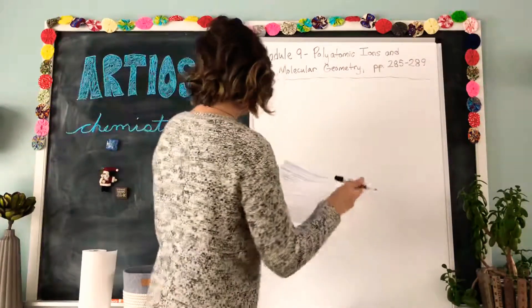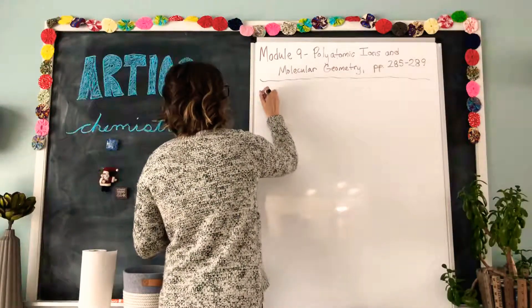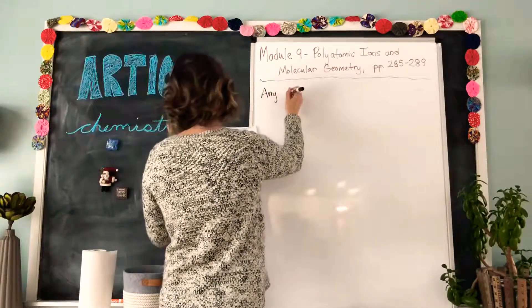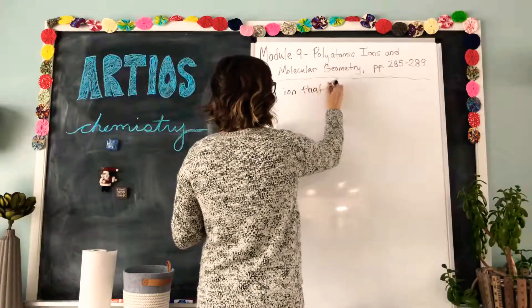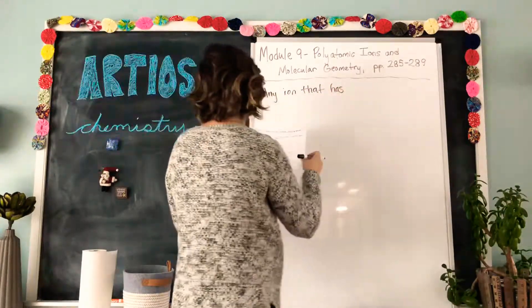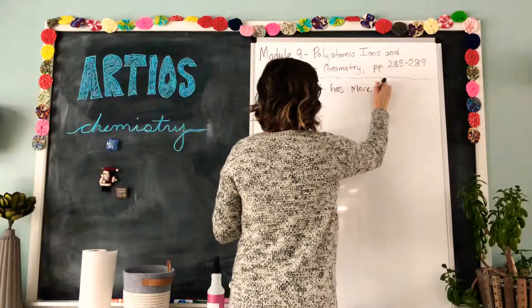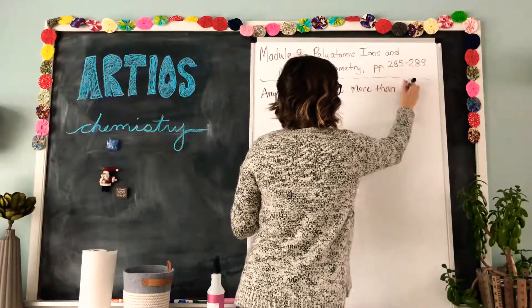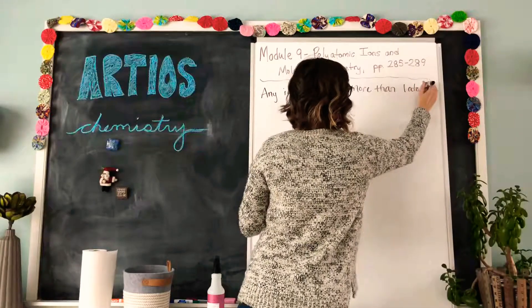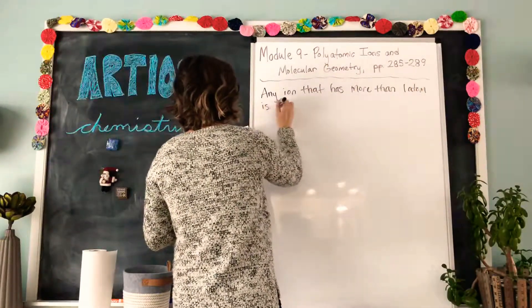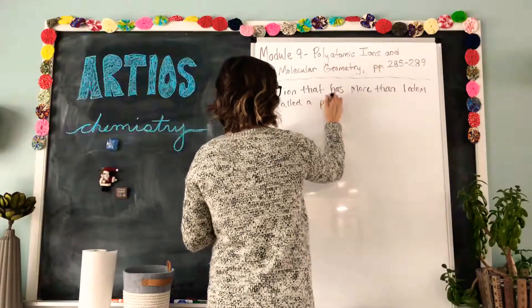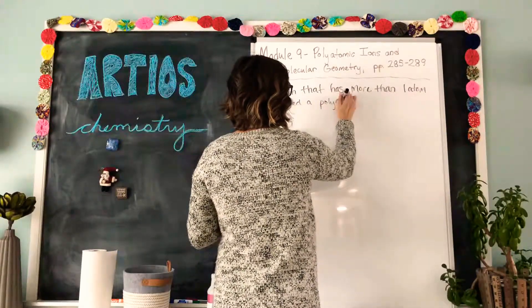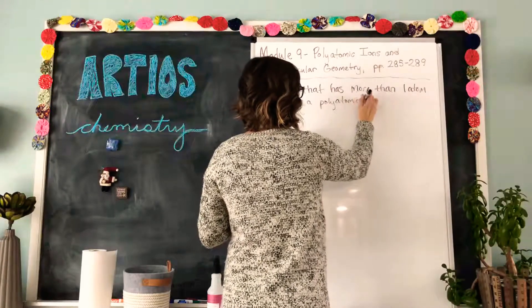All right, any ion that has more than one atom is called a poly, which means many, polyatomic ion.